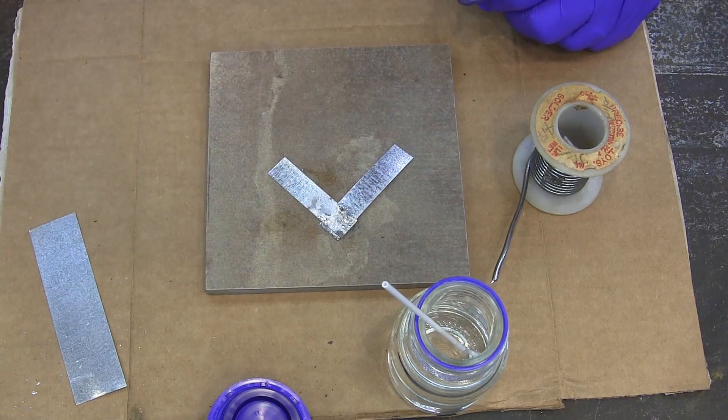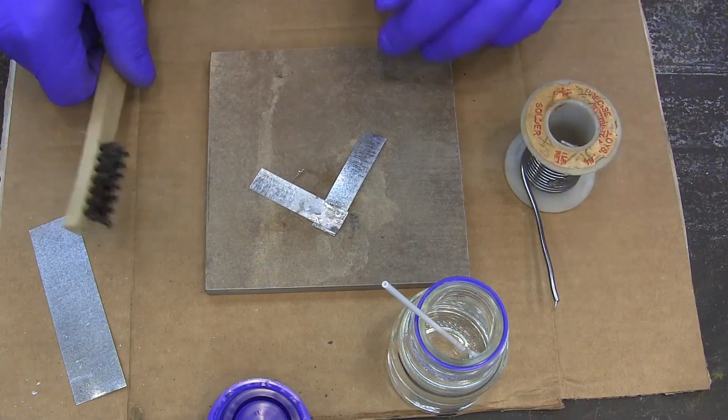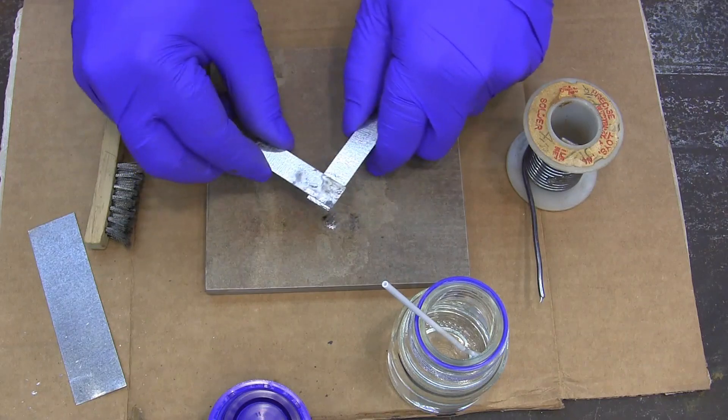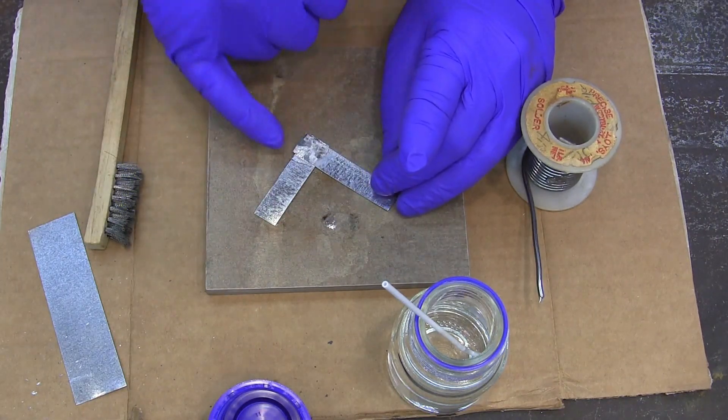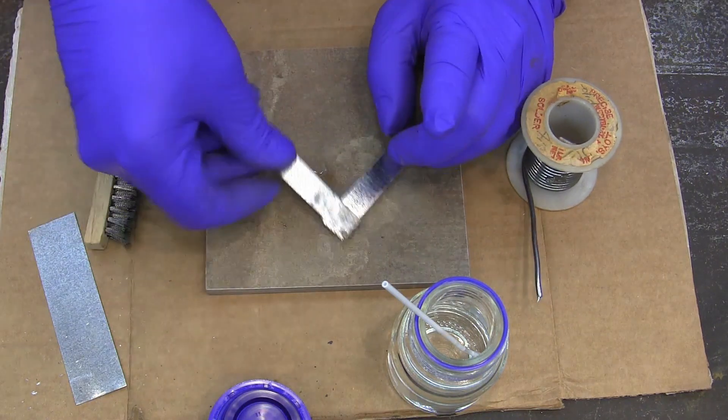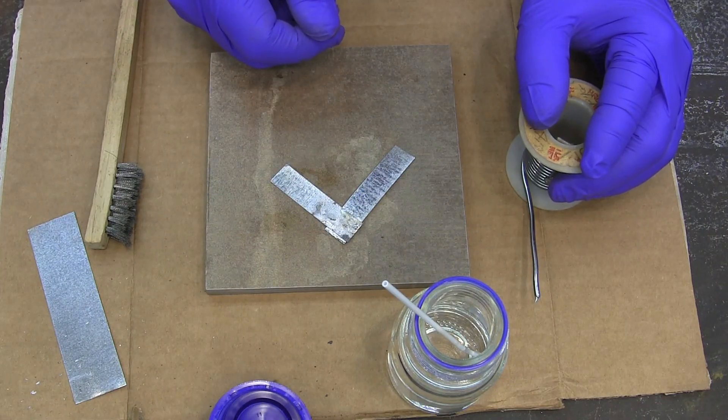And there we go. We got them joined together. We've got a nice waterproof seal there. That solder has flowed all the way through that joint and sealed it. It's that simple. Hope that was helpful to you. Thank you for watching.